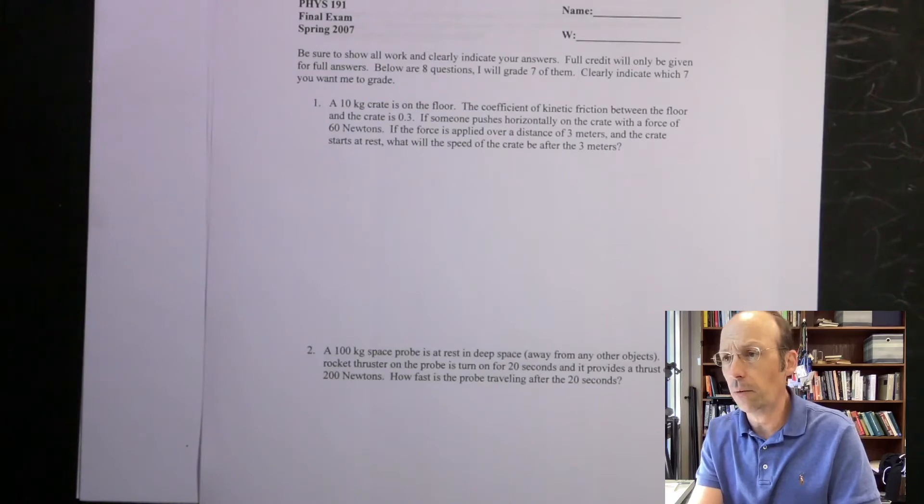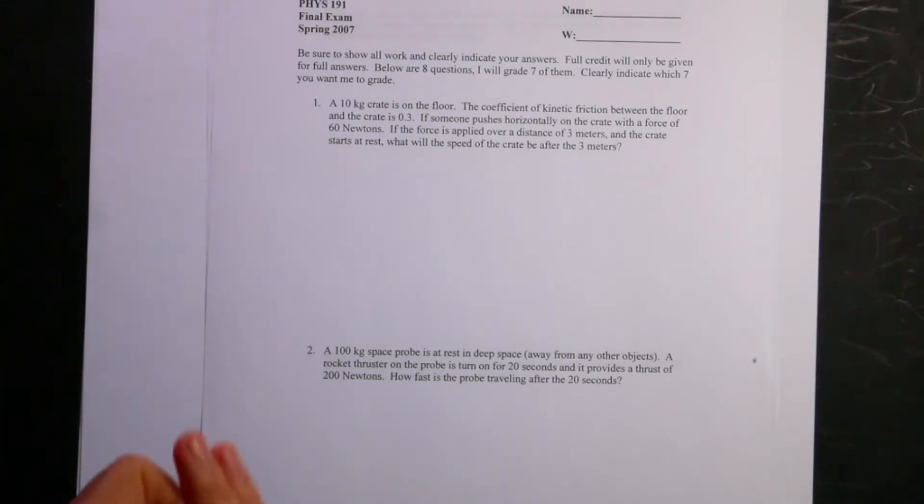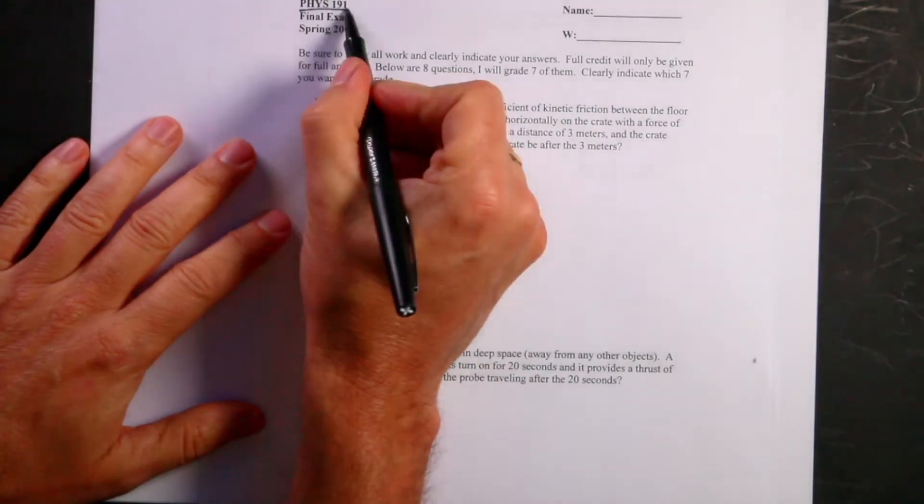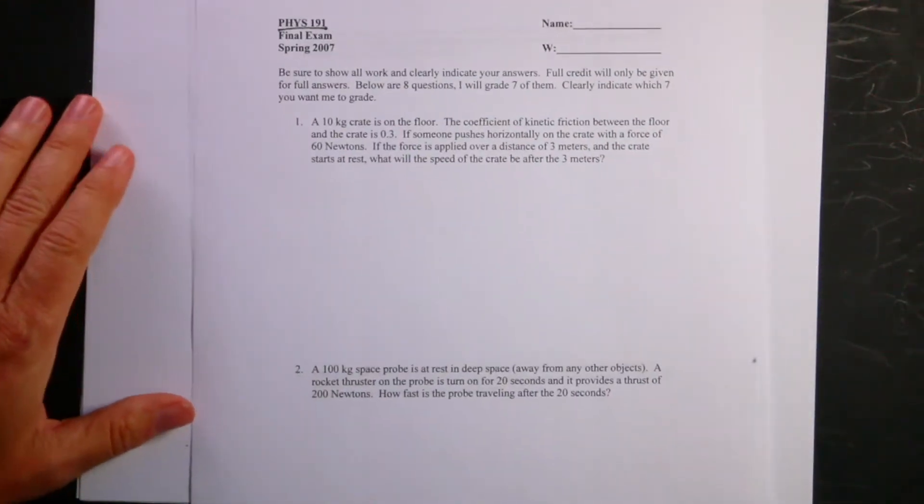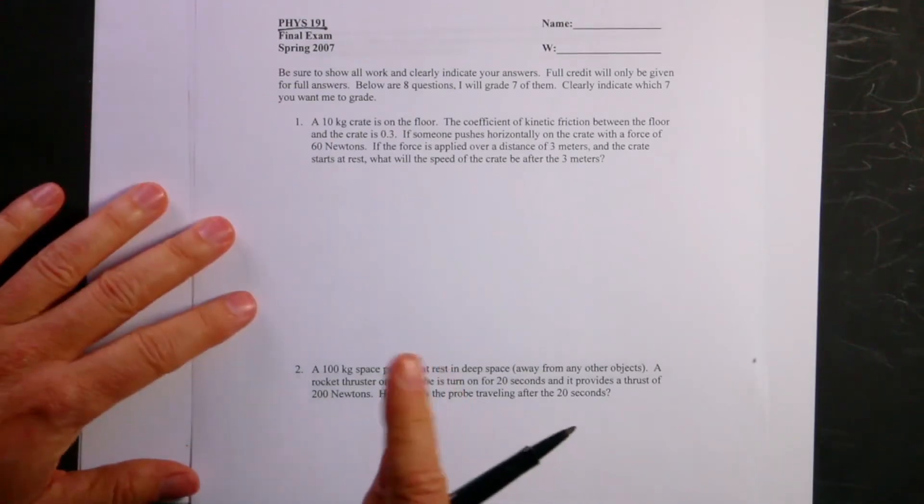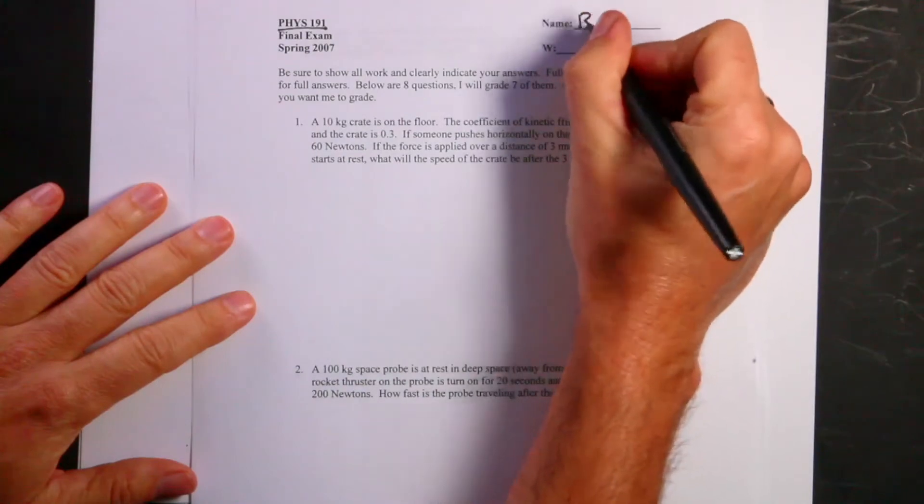It's kind of hard to read so I will read it to you. Here we are, this is Physics 191. You can see that right there. This is our algebra-based first semester of physics course, mechanics type of stuff. Here's where you'd put your name and my W number, that's your student ID number.